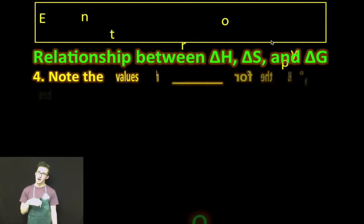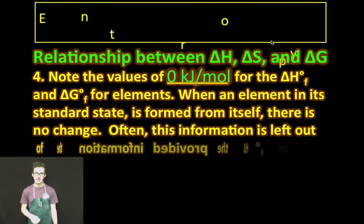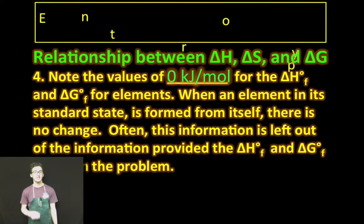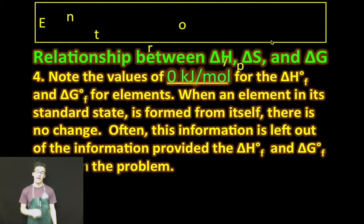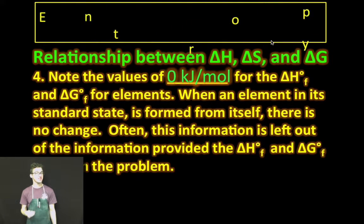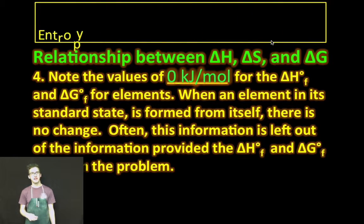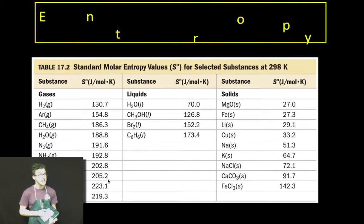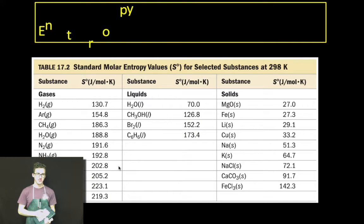Fourth thing to keep in mind as you think about the relationship between these three different things is to note that the values of zero kilojoules per mole, the enthalpy of formation and Gibbs free energy formation for the elements. That's just their value by definition. Often, this information is left out on the information provided in the enthalpy of formation and Gibbs free energy formation values in a problem, something that you need to lock away in your brain. But notice that for entropies of formation for the elements, those values are not zero for elements in their standard states. Common misconception.